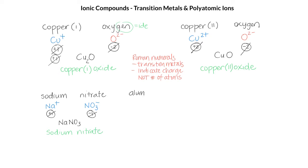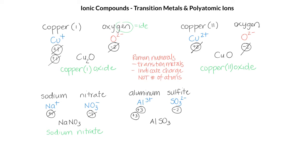Let's look at how we make a compound with aluminum and sulfite. Aluminum is Al³⁺, and sulfite is the polyatomic ion SO₃²⁻. So we've got plus 3 and minus 2. If we write AlSO₃ with one of each, we see that our charges don't cancel. So we are going to need 2 aluminum and 3 sulfite so that we get plus 6 and minus 6, and those will cancel out.